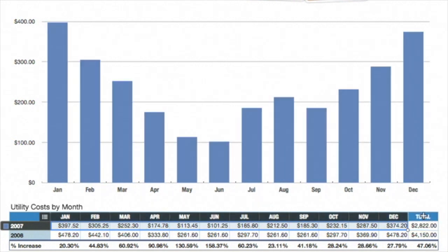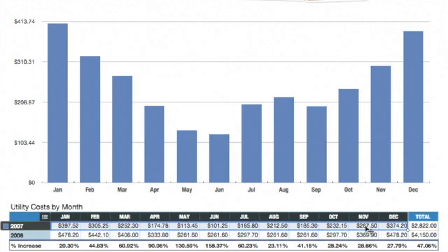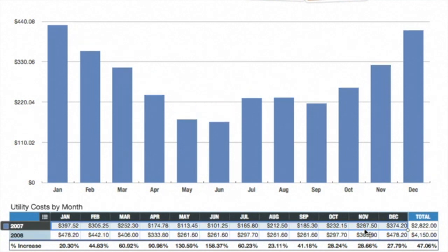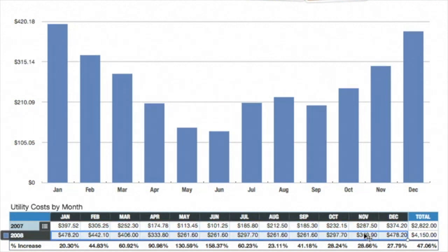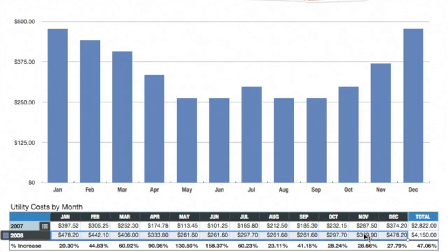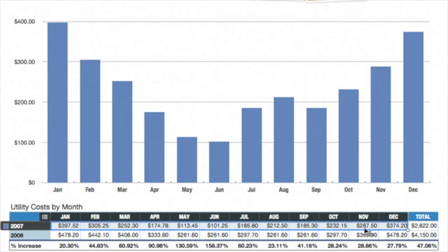Now the chart more clearly represents the relative costs of the individual months. It's fast and easy to view the data plotted in the chart in different ways. For example, to see the difference between the costs for 2007 and 2008, select the chart, then go to the selected row in the table and drag it down over the 2008 row. The chart dynamically updates as you move your highlighted row, allowing you to quickly visualize the relationships between the two years.